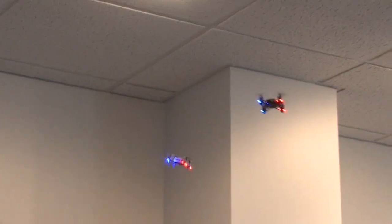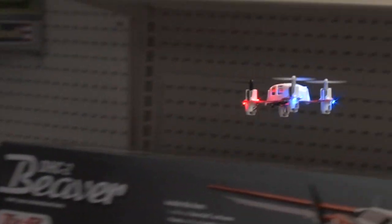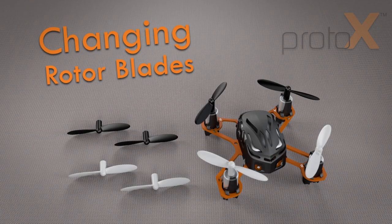You already know that the Proto-X is the world's smallest RC quadcopter. But do you know how to replace the rotor blades if they come off in a crash? Watch this helpful step-by-step video to see how easy they are to replace.